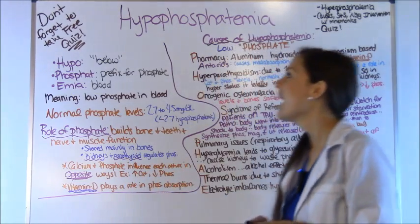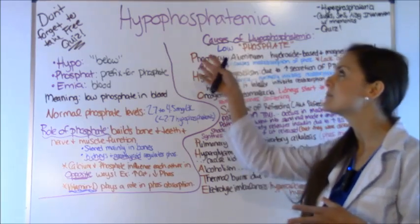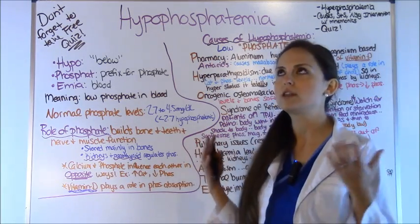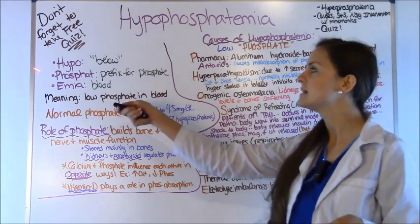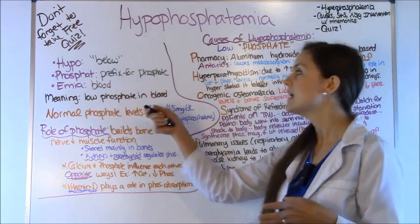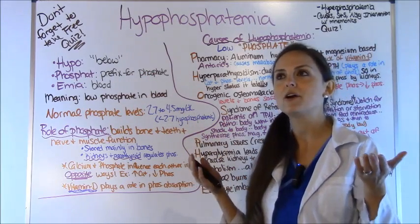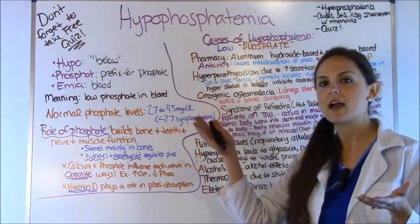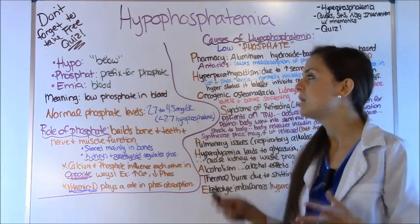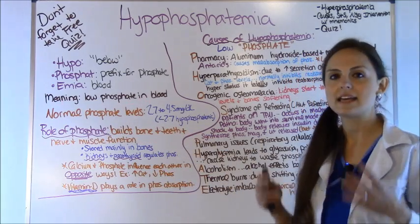As I do in all my fluid and electrolyte videos, I like to break down these big words so we know what electrolyte we're dealing with. The first part is hypo, which means below. Phosphate is the prefix for phosphate. And -emia means blood. So put it all together and you get low phosphate in the blood.